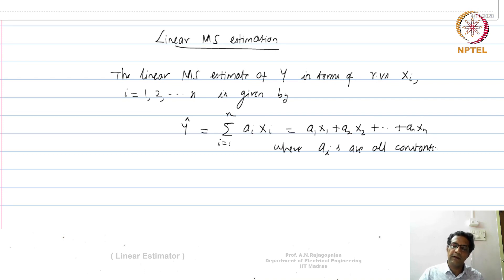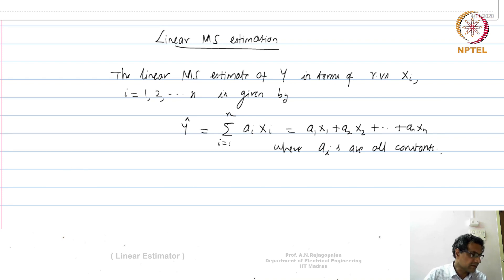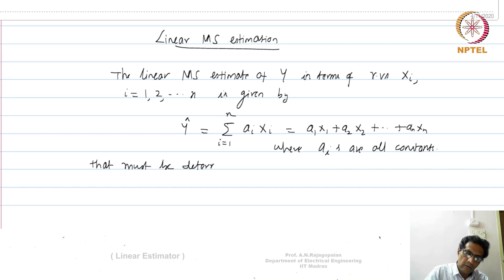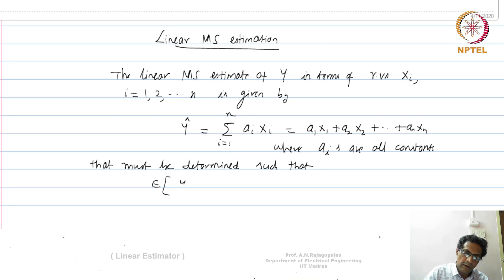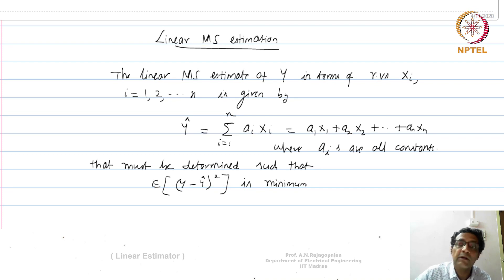The idea is that we would like to solve for a₁, a₂, up to aₙ, such that the expectation of (y − ŷ)², where ŷ is this linear estimator, is as small as possible — is minimum — under the constraint that ŷ is linear.